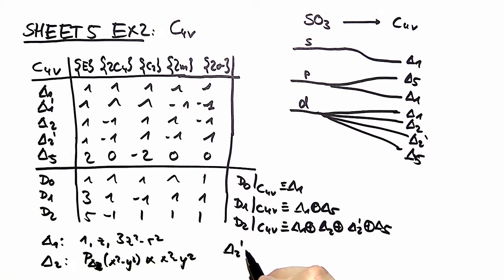Delta 2 prime is nothing else than xy, and in delta 5 you have x comma y and xz comma yz.